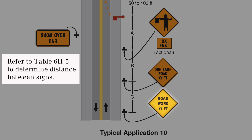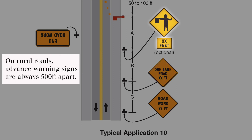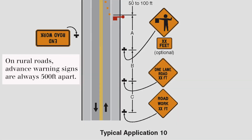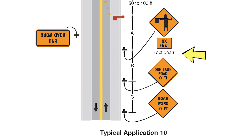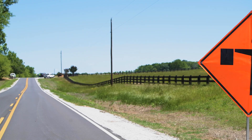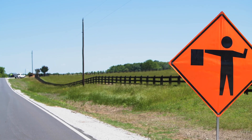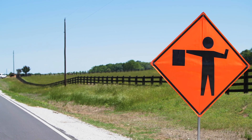The first sign seen by traffic is a Road Work Ahead sign, followed by a One Lane Road Ahead sign, and the final sign seen by traffic is the Flagger sign. A Be Prepared to Stop sign may be added to the sign series. When used, it should be located between the Flagger sign and the One Lane Road Ahead sign. Flashing warning lights and/or flags may be used to call attention to the advance warning signs.